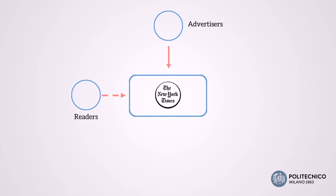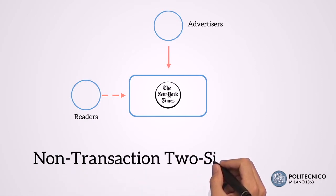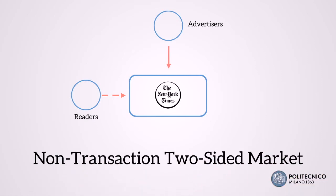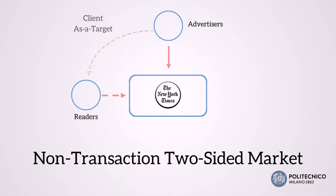In this case, the platform does not allow a direct transaction among the two sides. Indeed, it is a non-transaction two-sided market, where the readers' eyeballs are sold to advertisers in a client-as-a-target perspective, represented through the green arrow.